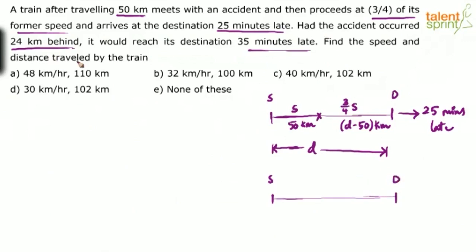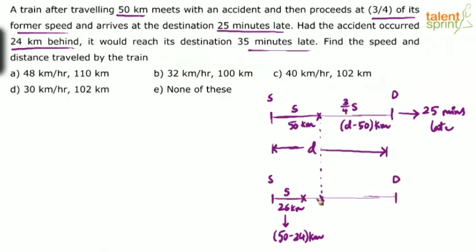24 kilometers behind means the accident occurs at 50 minus 24 = 26 kilometers. So for 26 kilometers the train travels at speed S, and for the remaining D minus 26 kilometers it travels at three-fourth of S. In this second case, the train arrives 35 minutes late.